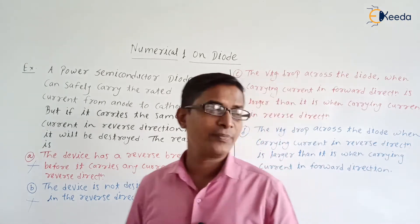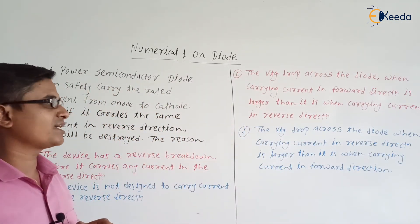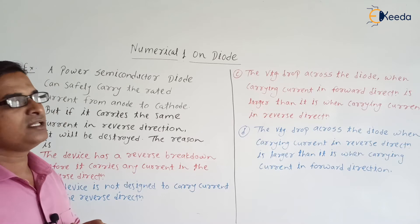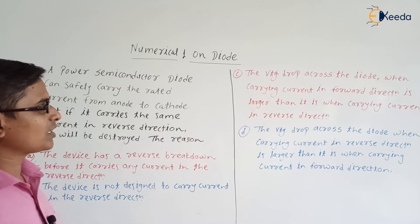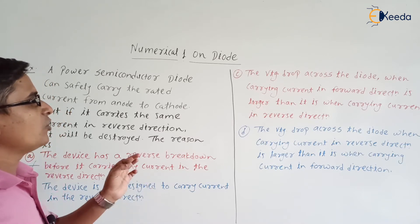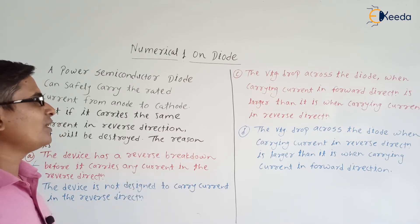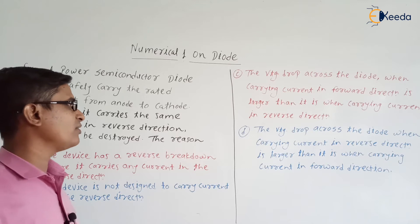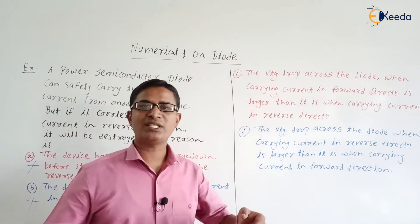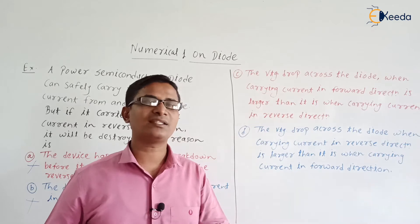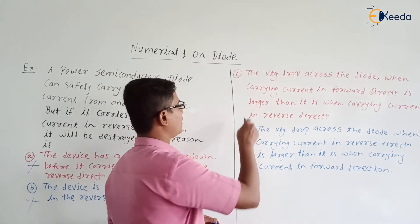Third option: the voltage drop across the diode when carrying current in the forward direction is larger than it is when carrying current in the reverse direction. Whether the forward voltage drop is greater than the reverse voltage drop? No, this is also not true.